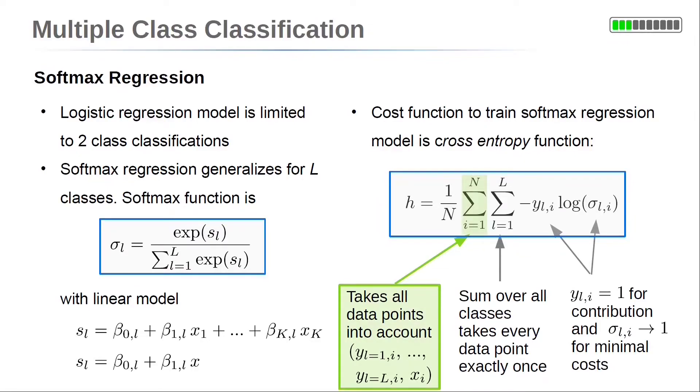The sum over i takes all data points into account. For the L target variables y_li, the first index denotes the class, the second index refers to the data point. Here we choose a single independent variable x, so a single subscript i is used for the data point.